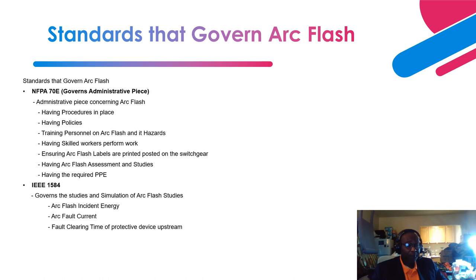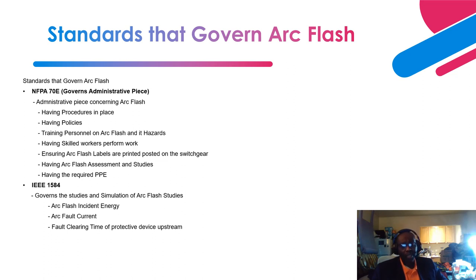Next is IEEE 1584. This standard governs the studies and simulation of Arc Flash. It covers incident energy calculation — calculating incident energy in calories per square centimeter. The key parameters needed include the Arc Flash current, the short circuit current, and the fault clearing time of the upstream protective device. For example, a typical upstream protective device for a switchgear is the incomer protective relay that operates the incomer breaker.